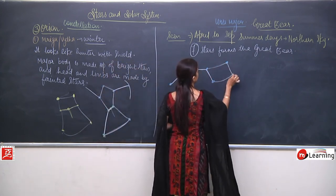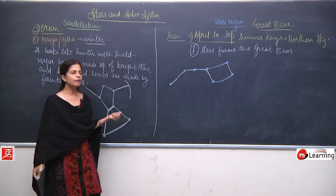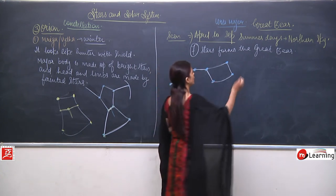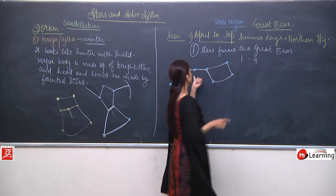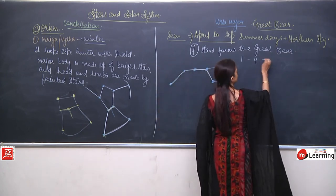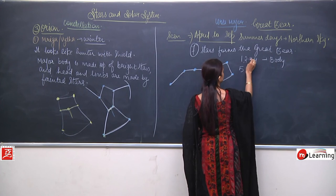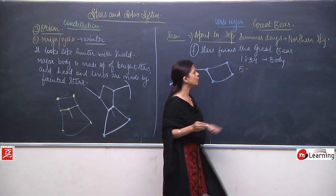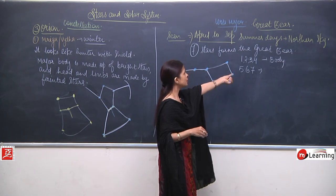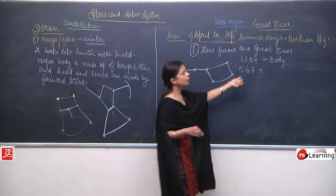The 7 stars give the shape of the great bear. Stars 1 to 4 make the body, and stars 5, 6, and 7 make the lower part. Stars 1 to 4 are the brighter stars, and stars 5, 6, and 7 are the fainter stars.